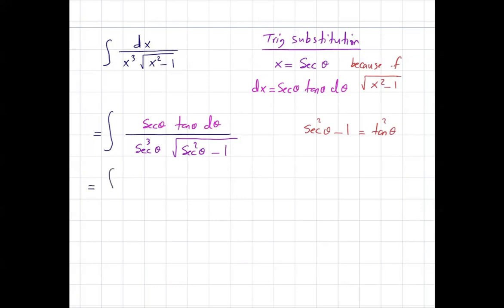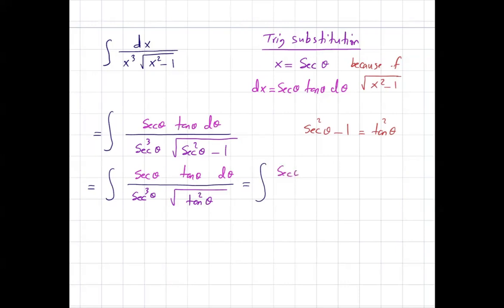This integral can be simplified as the integral of secant theta d theta divided by secant to the third power times square root of tangent squared theta. The square root of tangent squared is just tangent theta. We can then cancel tangent theta from numerator and denominator, leaving the integral of d theta divided by secant squared theta.